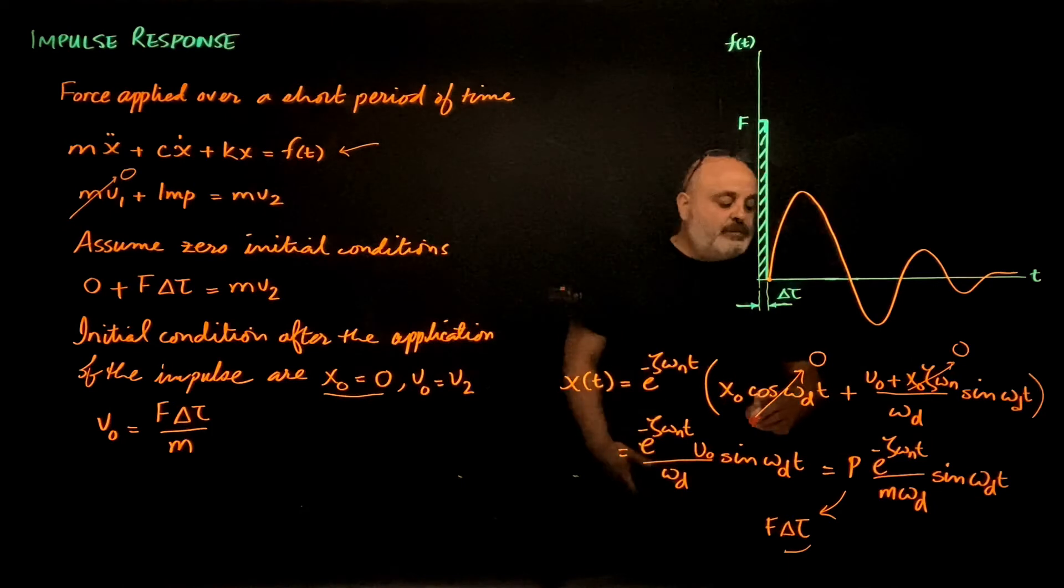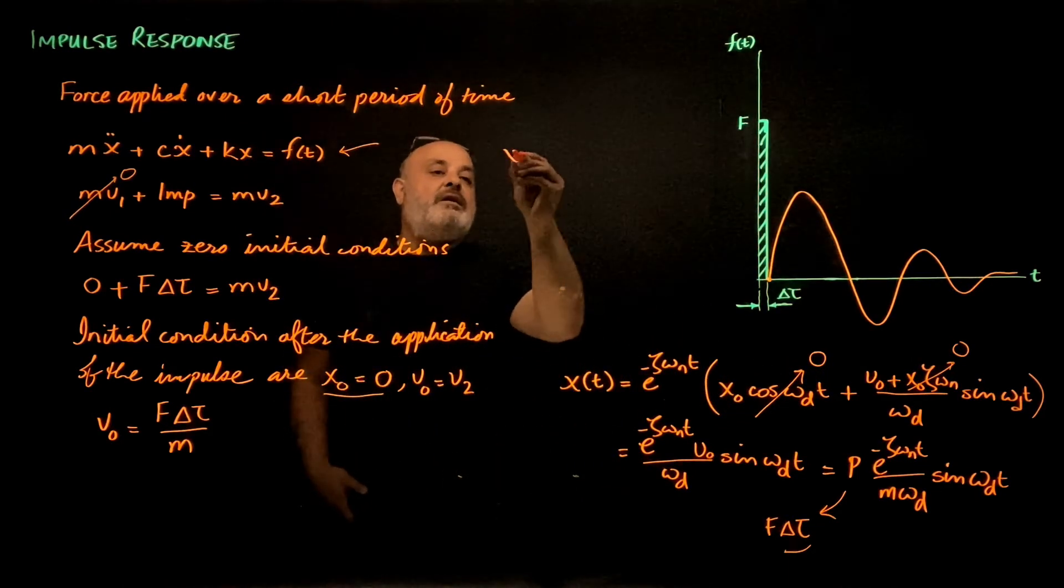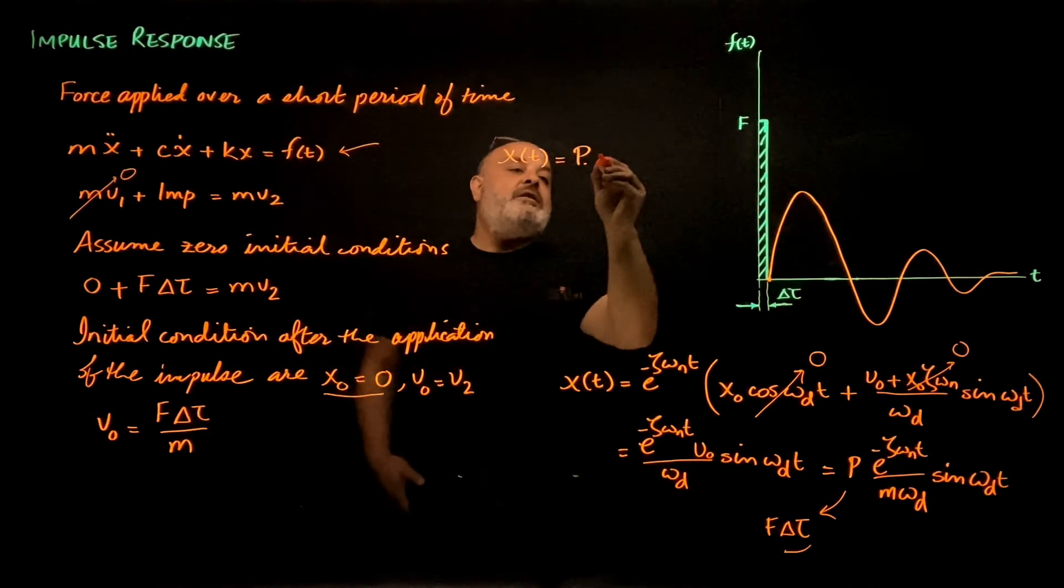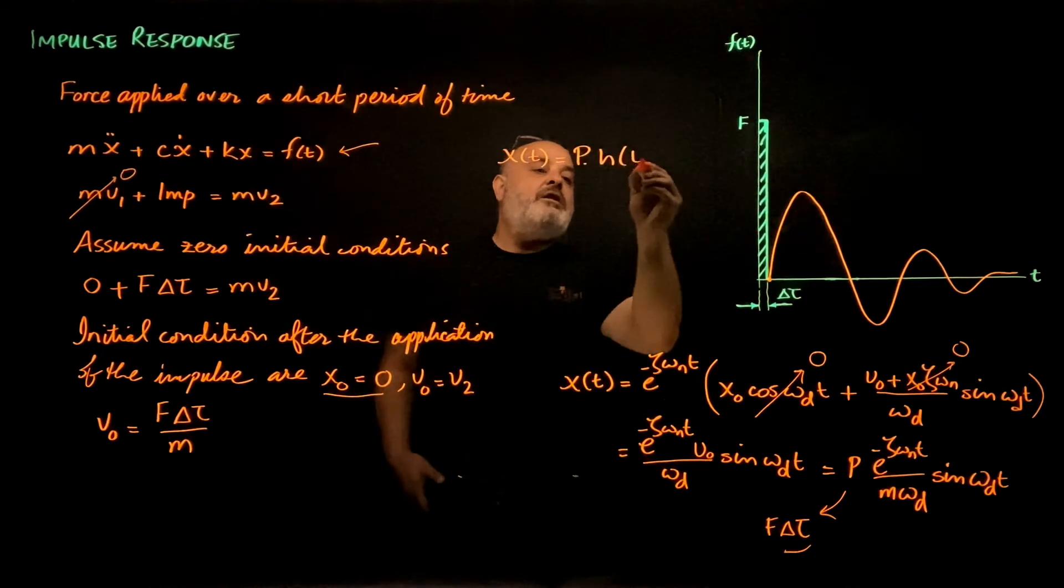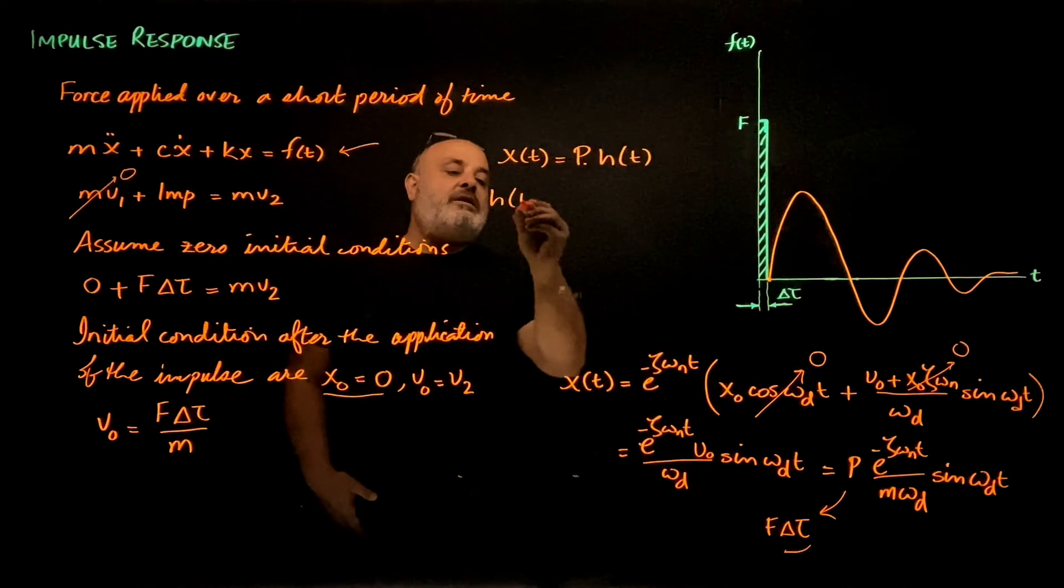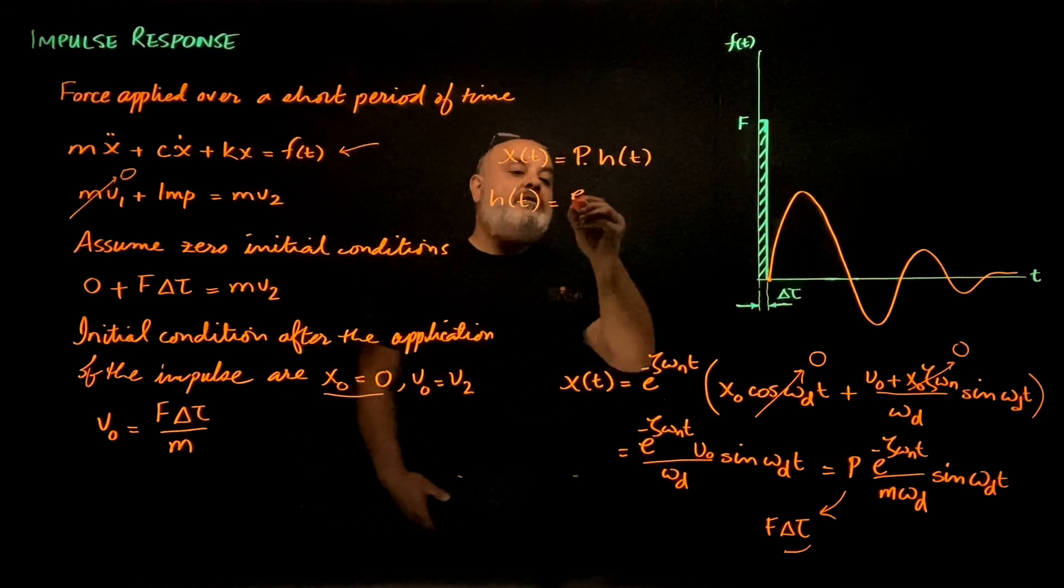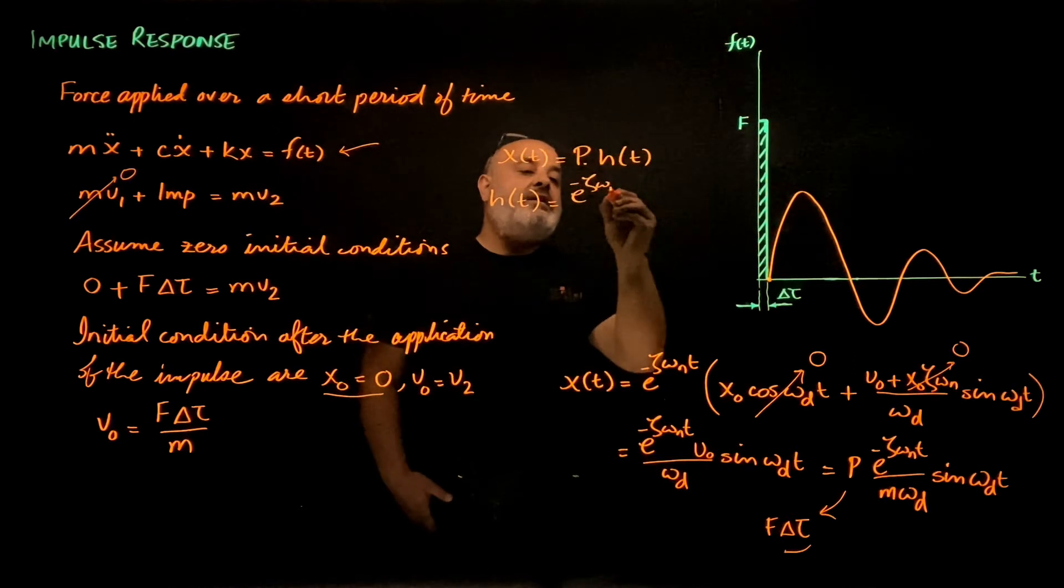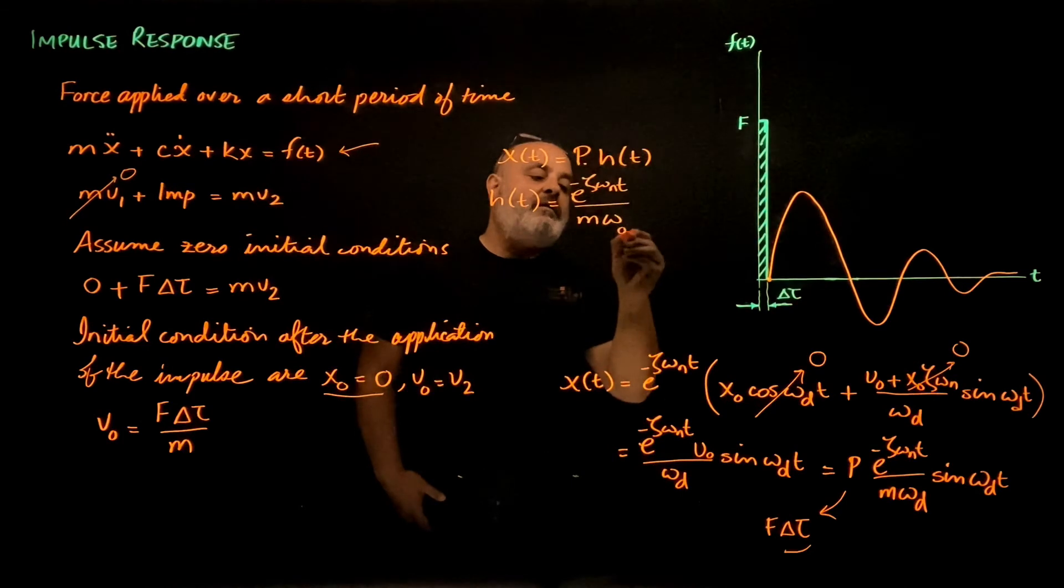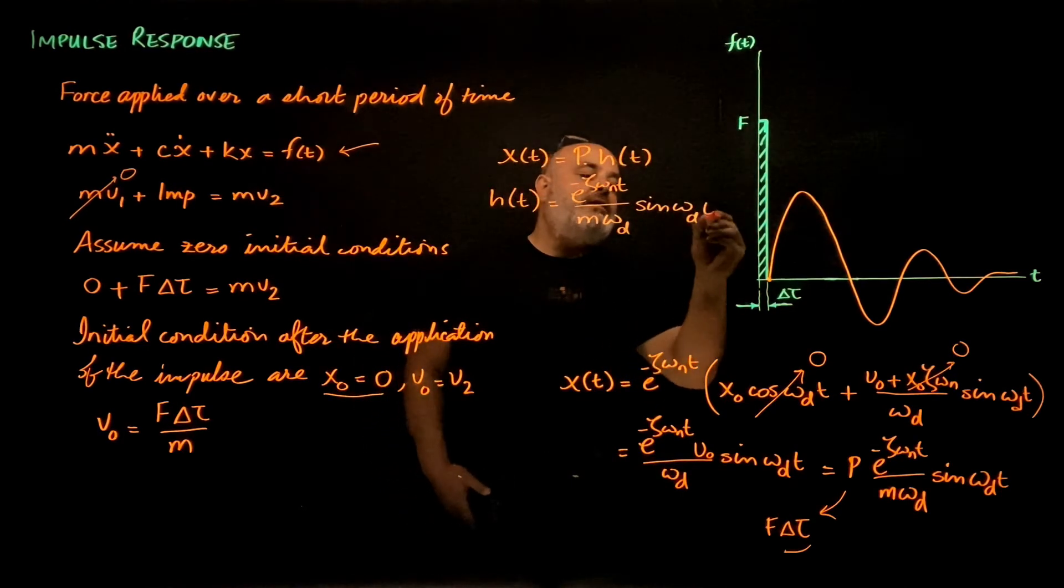And I'm going to call this the impulse response function. So I can write this as x of t equals the impulse P times h of t, where h of t is e to the negative zeta omega n t divided by m omega d sine omega d t.